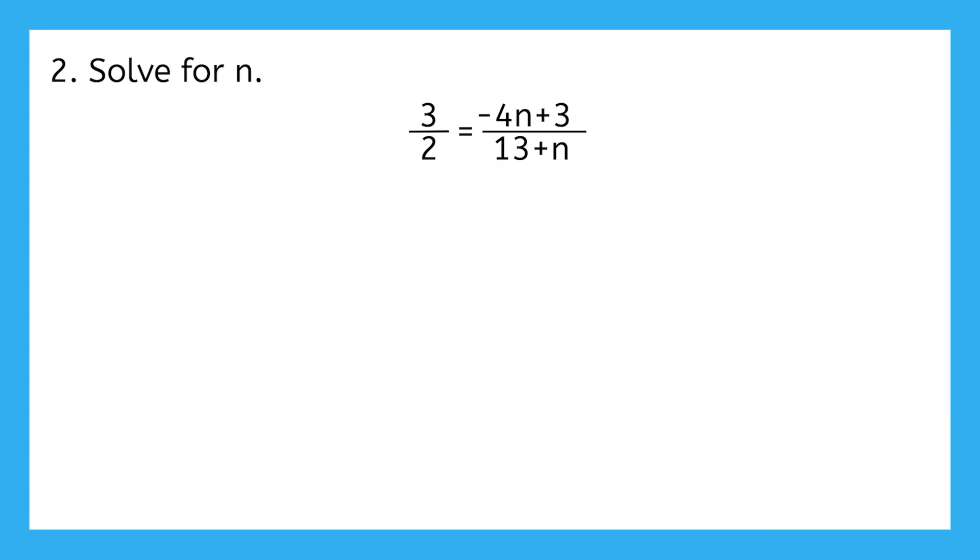I definitely want to get rid of the 2 in the denominator on the left and the 13 plus n in the denominator on the right. It actually doesn't matter which one I do first, so I'm going to start by multiplying both sides by 2. On the left, that's going to cancel and leave just 3. On the right, I'm going to put my 2 over 1 to see that I need to distribute it to the negative 4n plus 3 in the numerator only. That's going to make this negative 8n plus 6 over 13 plus n.